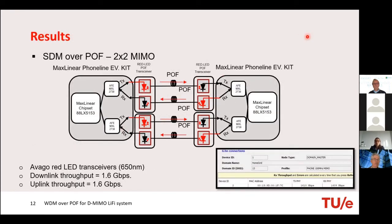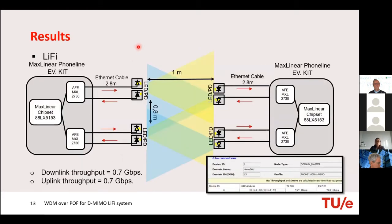For the results, we first implemented SDM only over PoF. We used the MaxLinear evaluation kit connected to red LED PoF transceivers, coupled into each PoF. With each channel transmitted through one PoF, we achieved 1.6 gigabits per second for both downlink and uplink — symmetric performance in both directions. Then we measured performance for only the Li-Fi channel using Ethernet cables, and got 0.7 gigabits per second for both downlink and uplink.